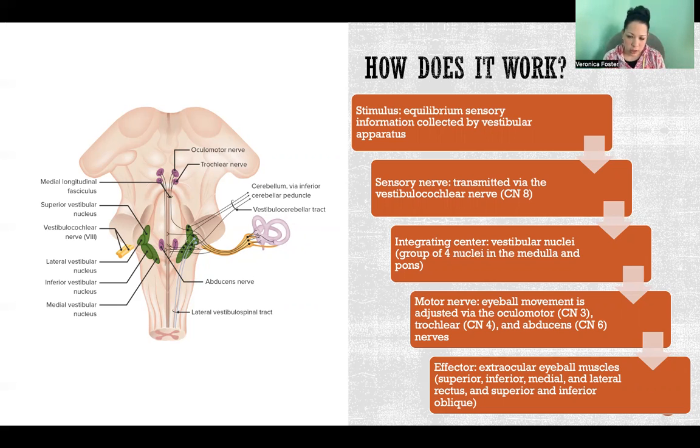That information is then transmitted via the sensory nerve, the vestibulocochlear nerve. Cranial nerve number eight is the sensory nerve in this example.